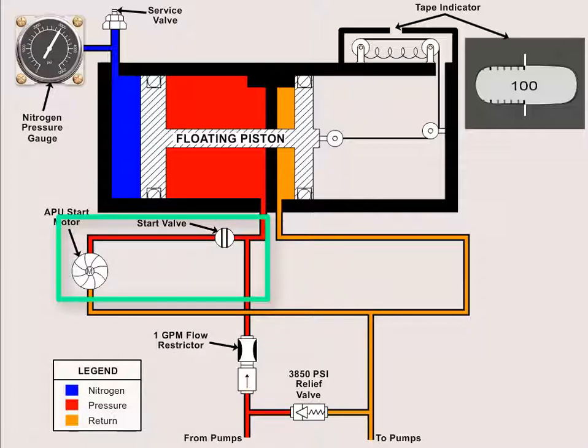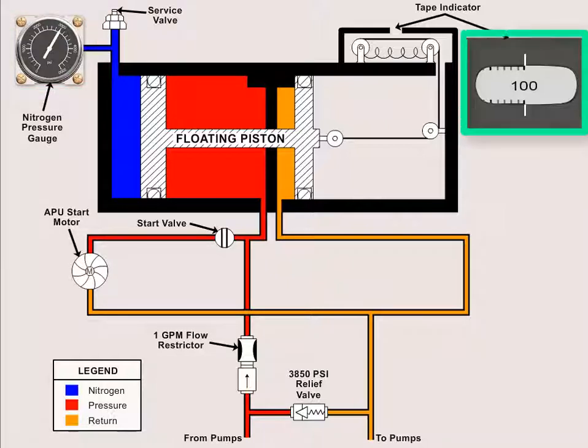Nitrogen quantity is measured by a pressure gauge in the cabin overhead near the hand pump. The accumulator piston is connected to a tape position indicator that is marked in percent of hydraulic charge. When the tape position indicator is at 100%, the pressure chamber is fully charged. When the tape position indicator is at 0%, the accumulator is empty and needs recharging.